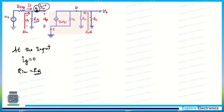This is how we derive the expressions for gain, output resistance, and input resistance for the common source amplifier. In the same way, you can derive expressions for any amplifier by analyzing input voltage, output voltage, and resistances from the equivalent circuit. Thank you.